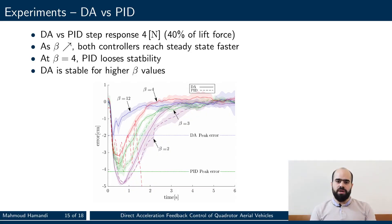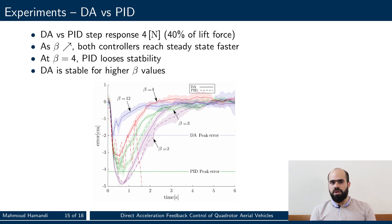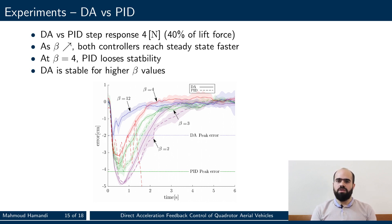Finally, in this final experiment, we compare the controller's performance against a PID when subjected to a step response. The step response was generated in code to assure the repeatability of the experiment. We can see from this plot that for both controllers, the platform rejects the disturbance faster as beta increases. However, we can see that for the PID, at beta equal to 4, the controller stops being stable. On the other hand, the direct acceleration controller is stable for beta up to 12. As such, the direct acceleration controller can be made more robust to external disturbances than the PID.